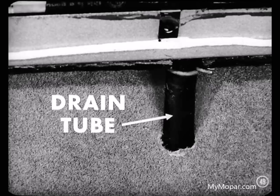Here's the point you want to remember about the evaporator: moisture contained in the air will condense on the evaporator coils and drain out on the road. That's a normal condition, and there are two little tubes — one on each side — to drain off this moisture.